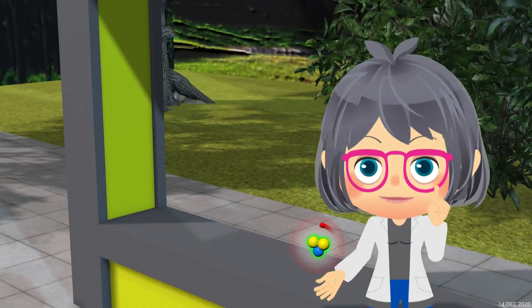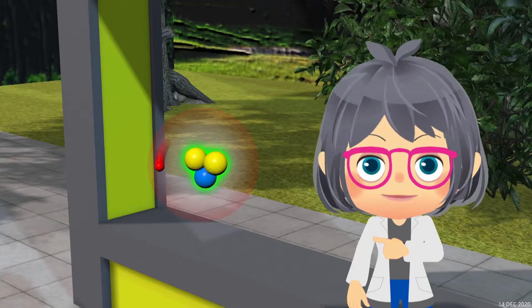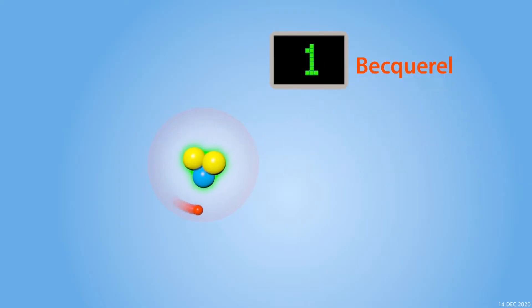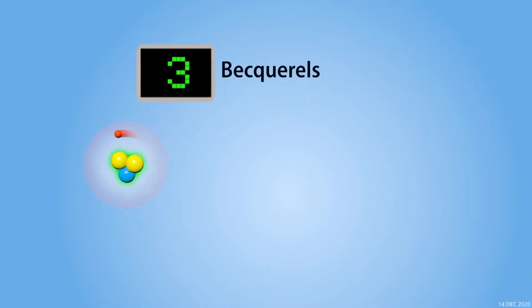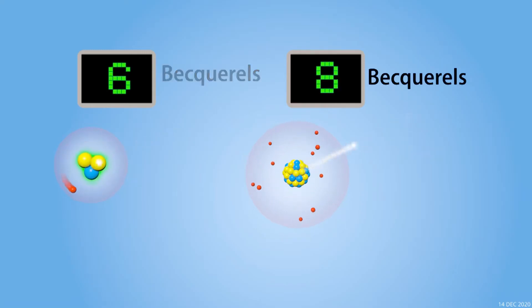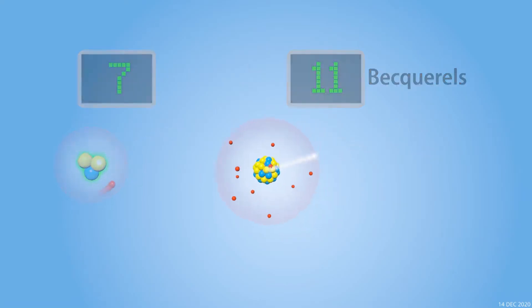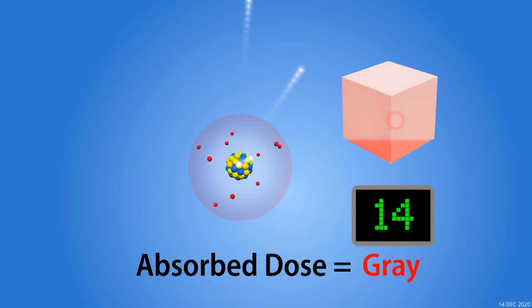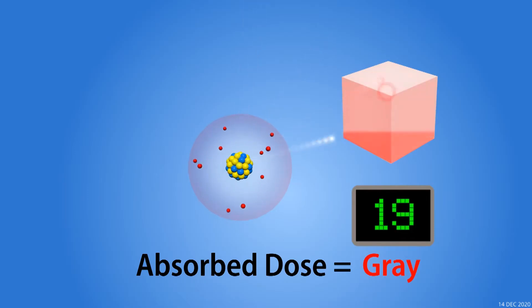Let's start with how scientists describe radiation quantitatively. How radioactive something is is measured in terms of its activity in Becquerel. The higher the activity, the higher also the amount of radiation emitted by the radioactive material. When this emitted radiation hits and gets absorbed by a mass of material, scientists use gray to describe how much of the radiation was absorbed. Gray is often referred to as absorbed dose.